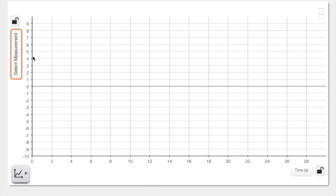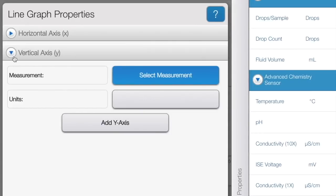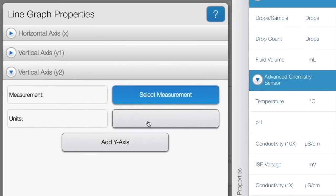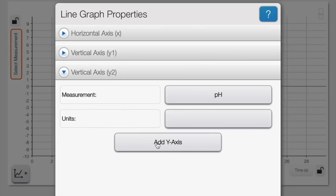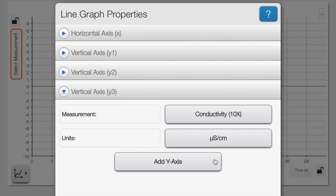Now push Select Measurement next to the y-axis. Then press the Select Measurement button under the vertical axis tab. Add the quick response temperature sensor from the menu on the right. Then press add y-axis and add the pH meter from the advanced chemistry sensor menu on the right.